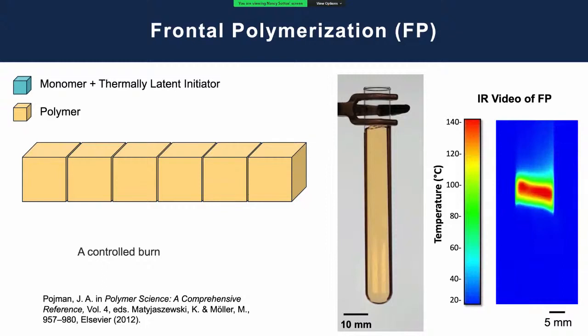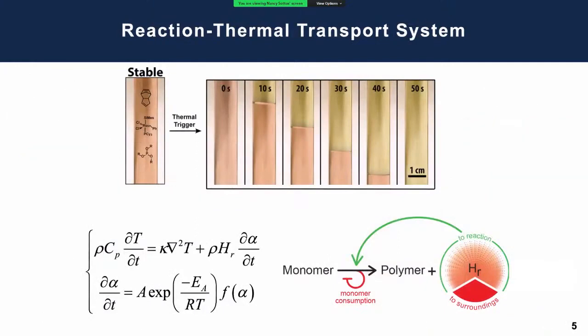If you look at this with IR video, I apologize these two videos are not on the same exact scale, but you can see the initial heat, an exotherm that initiates the reaction. Then you see this reaction wave moving at a fairly steady velocity down the test tube as we get monomer to polymer. You get a sense of the heat that's released in this system as well.